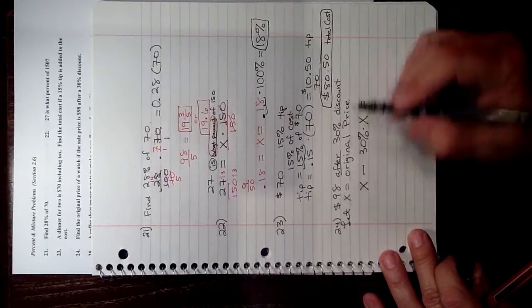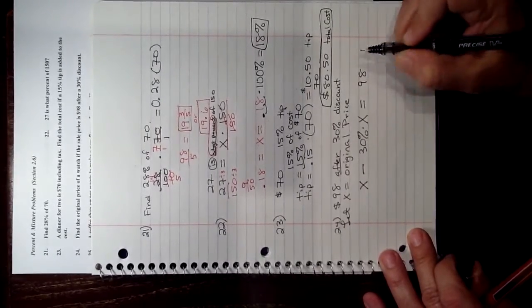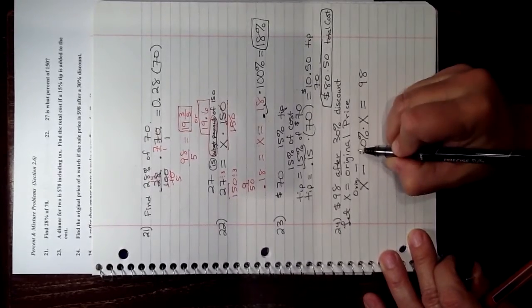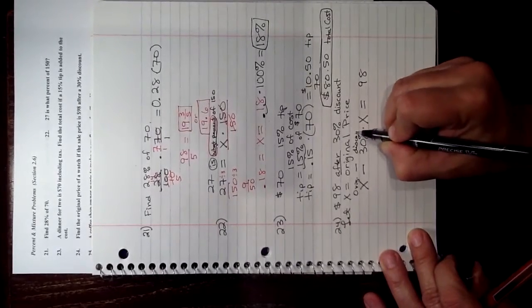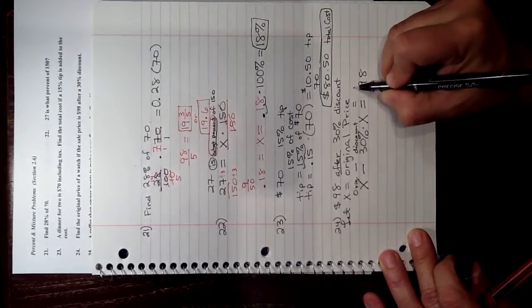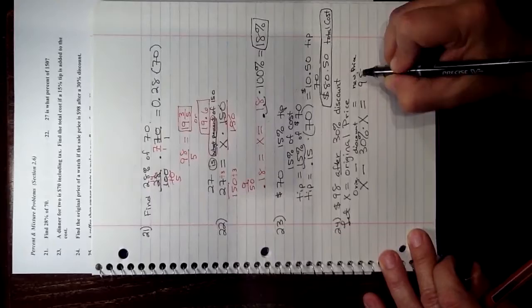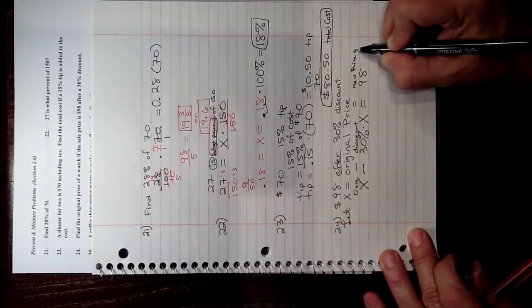And the sale price is $98. So you start with an original price, you take off a discount, and then that's going to equal your new price, which is the new price of the item when it's on sale.